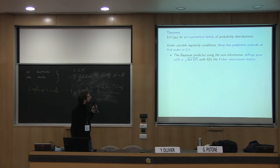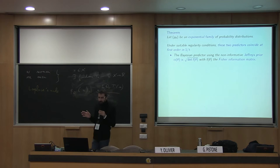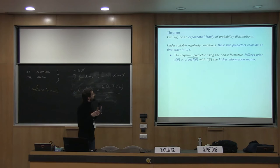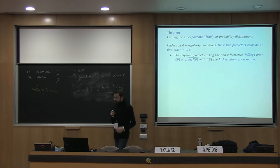Under some suitable regularity conditions, I have a theorem with two ways of computing the Bayesian predictor. At first order in 1 over t — the order I'm interested in — these two things coincide. The first is the Bayesian predictor with a particular prior, and this particular prior is the only canonical prior you can find for general probability distributions.